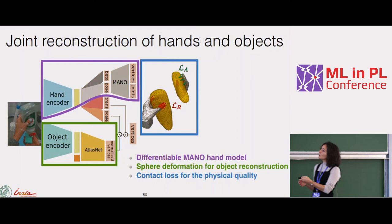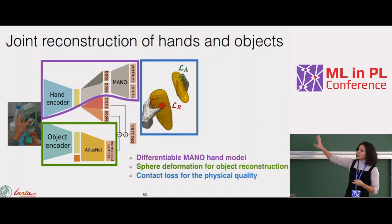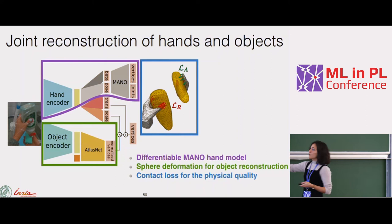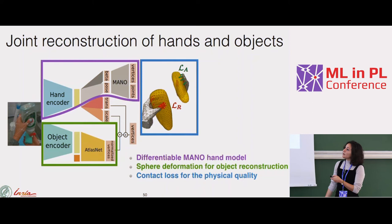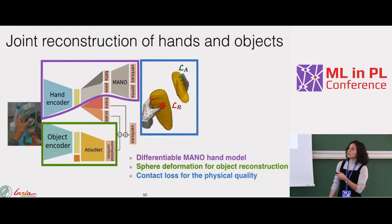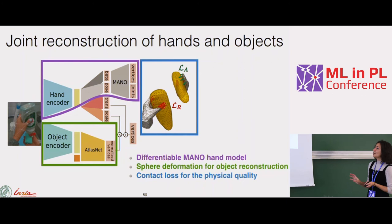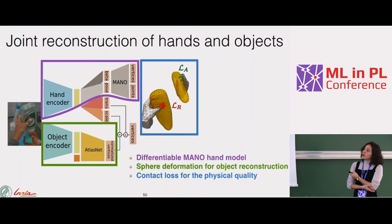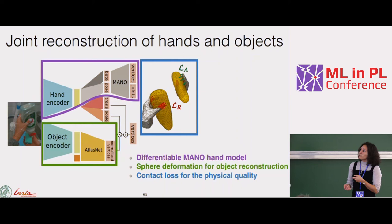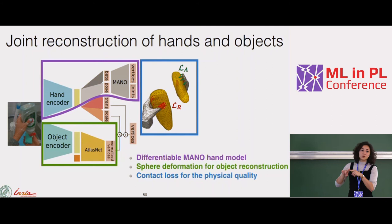Our proposed neural network architecture has three components. First, a hand model branch: a CNN encodes the input image into a representation, followed by fully connected layers. We use a parametric hand model called MANO — like SMPL but for hands — with a differentiable layer that outputs vertices and joints of each finger. You can put the loss on any of these. There are no learnable parameters in this MANO layer; it decomposes shape and pose deformations, similar to SMPL.